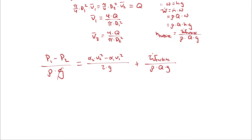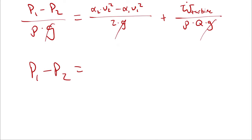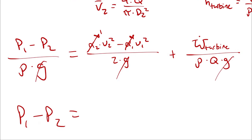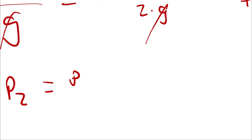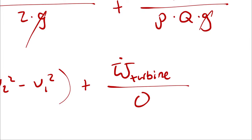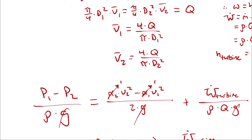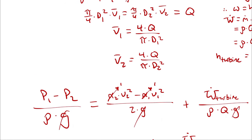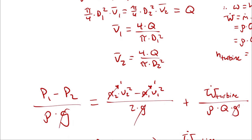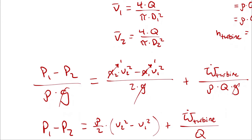I will multiply both sides by gravity and density, at which point I have p1 minus p2. The alpha terms are 1 because of turbulent flow, so this equals density over 2 times the quantity (V2-squared minus V1-squared), plus the power of the turbine divided by Q, because density cancels. Then I make the substitution for our velocities — that's density over 2 times (4 squared times Q squared) divided by (pi squared times D1 to the fourth), and similarly for D2.